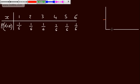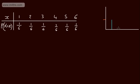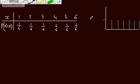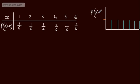So for each value 1 through 6, we have a probability of 1 over 6. This is graphing it, and all the bars should really be in a straight line. So the probability that x equals x is 1 over 6 for each of the values x equals 1, 2, 3, 4, 5, and 6.